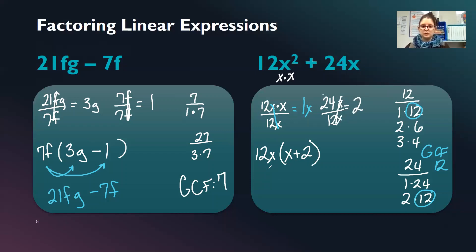I can double check by distributing. 12 times 1 is 12. 12x times x is x squared. 12 times 2 is 24. Bring down my x. And I have what I started with.